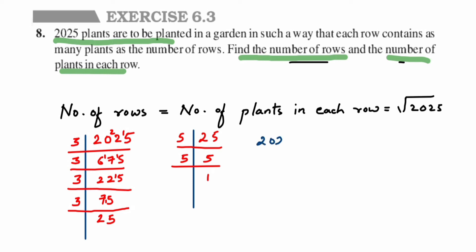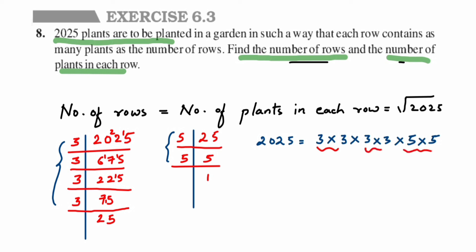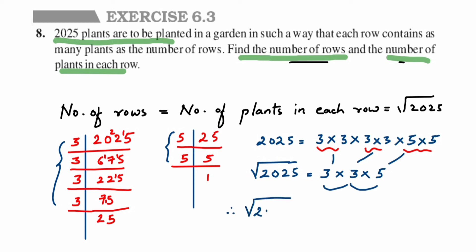Rewriting all the factors: 2025 = 3 × 3 × 3 × 3 × 5 × 5. Now pairing the factors: first pair of 3s, second pair of 3s, and a pair of 5s — three pairs in total, confirming 2025 is a perfect square. Taking one factor from each pair: 3 × 3 × 5 = 45. So the square root of 2025 is 45, meaning the number of rows is 45 and the number of plants in each row is also 45. I hope it's clear, thank you for watching!